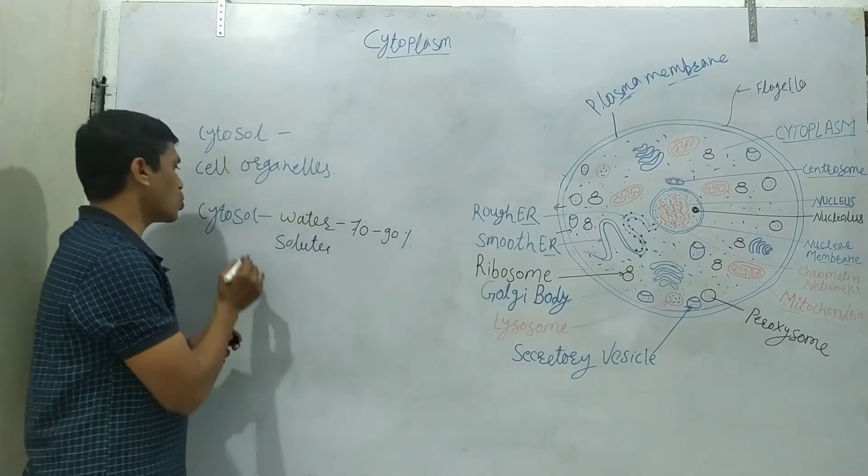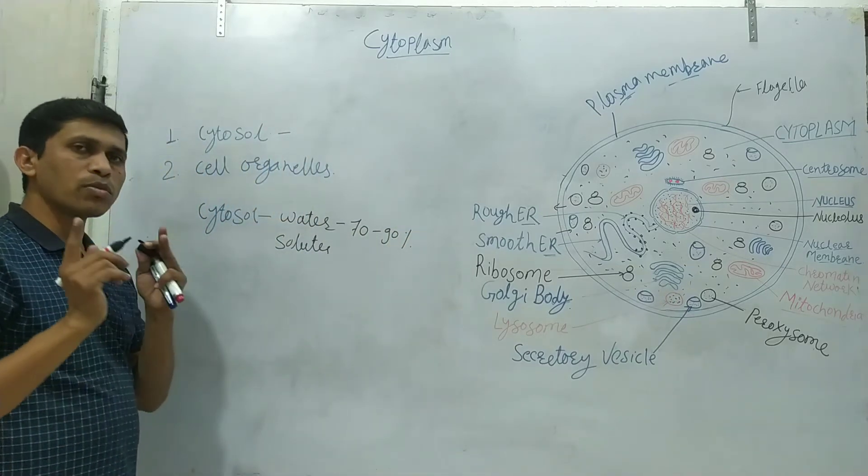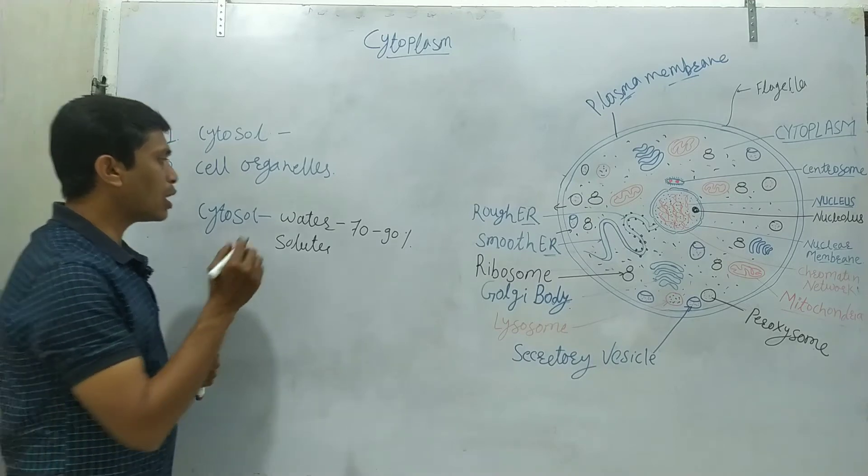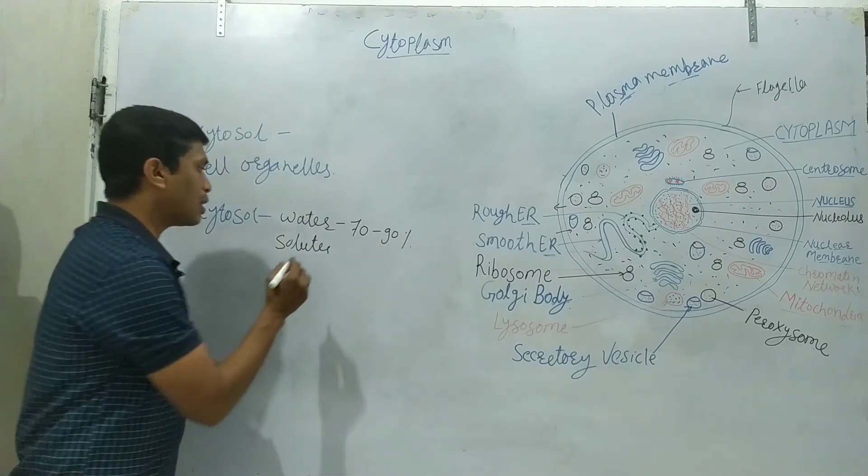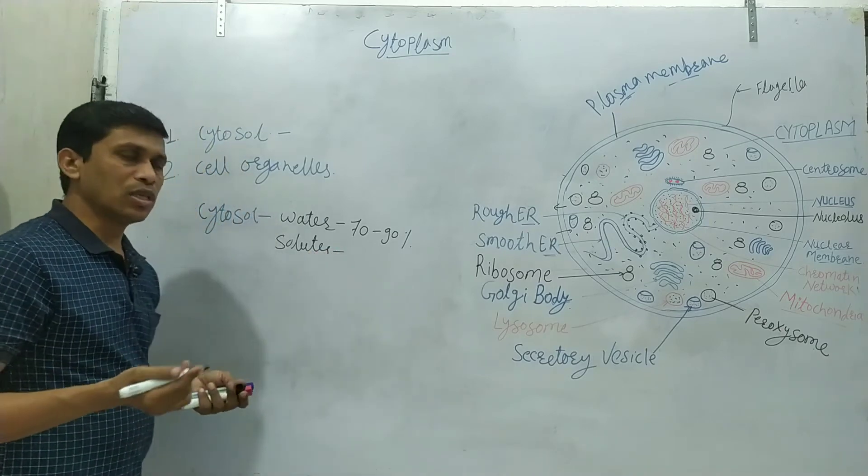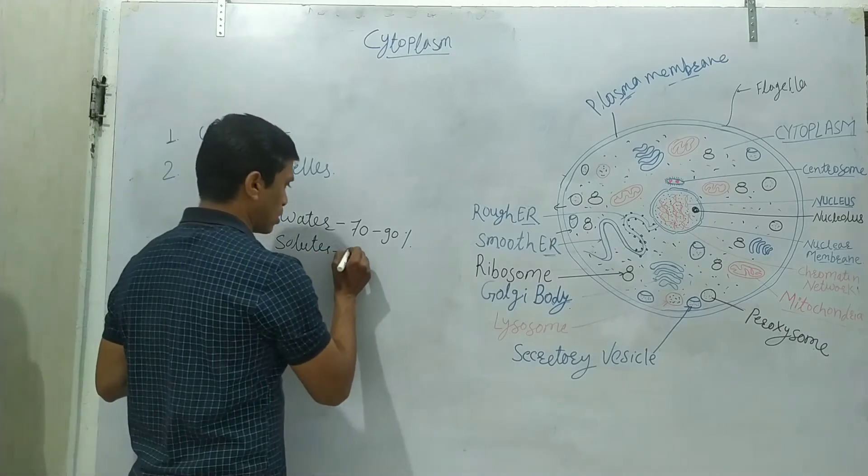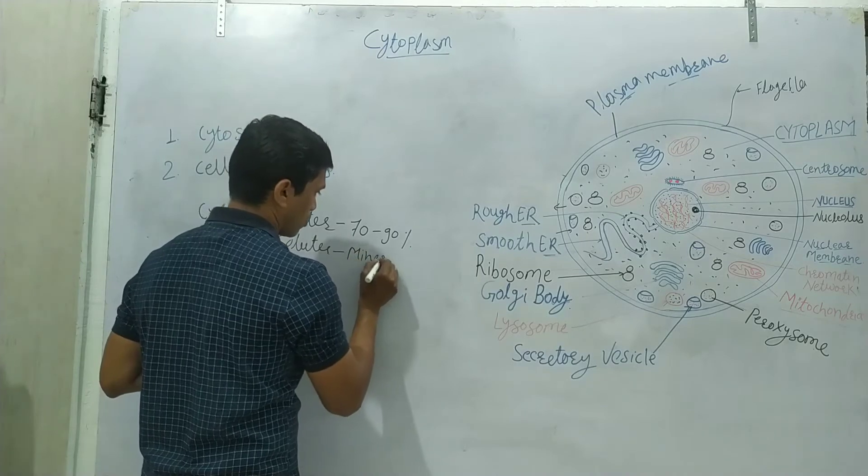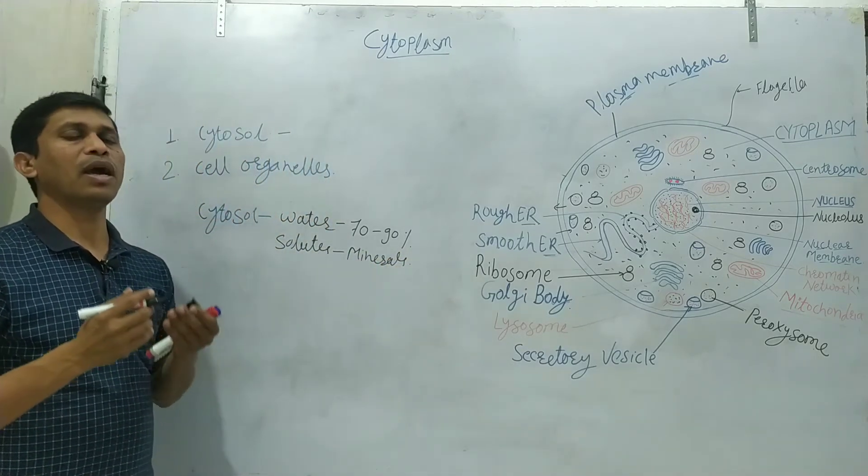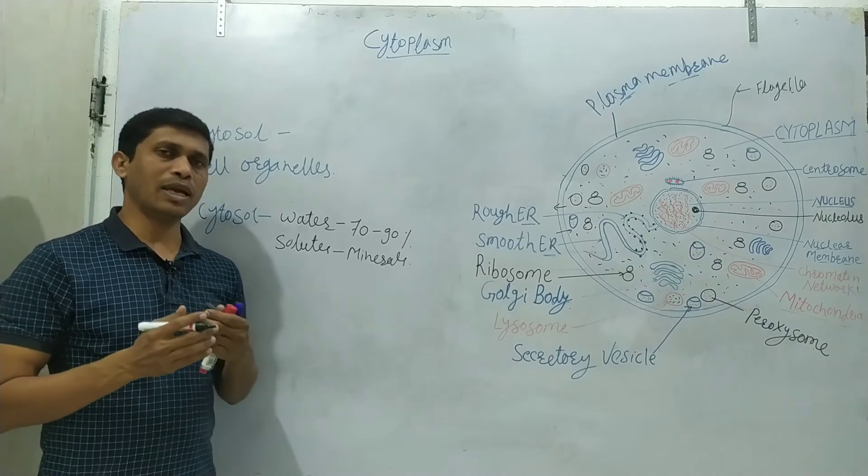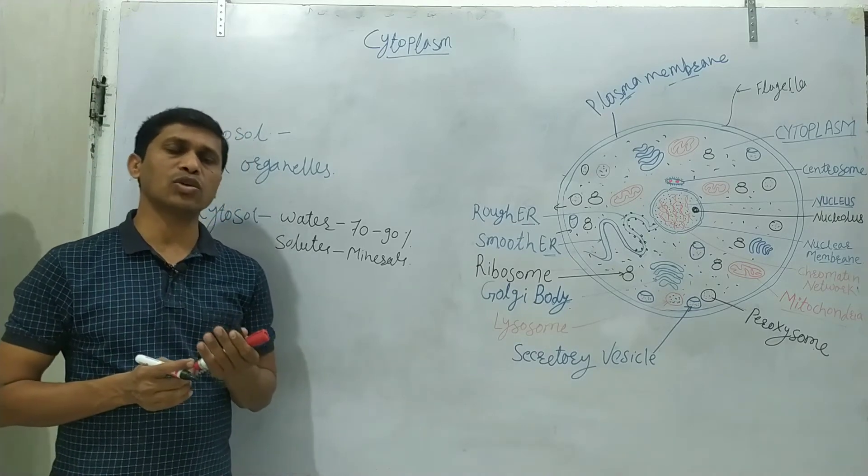The cytosol, the water, is the amount of 70 to 90 percent of water content. And there are a few solutes in the sense like the minerals or ions like calcium, magnesium, sodium ion, calcium ion, chlorine ions.